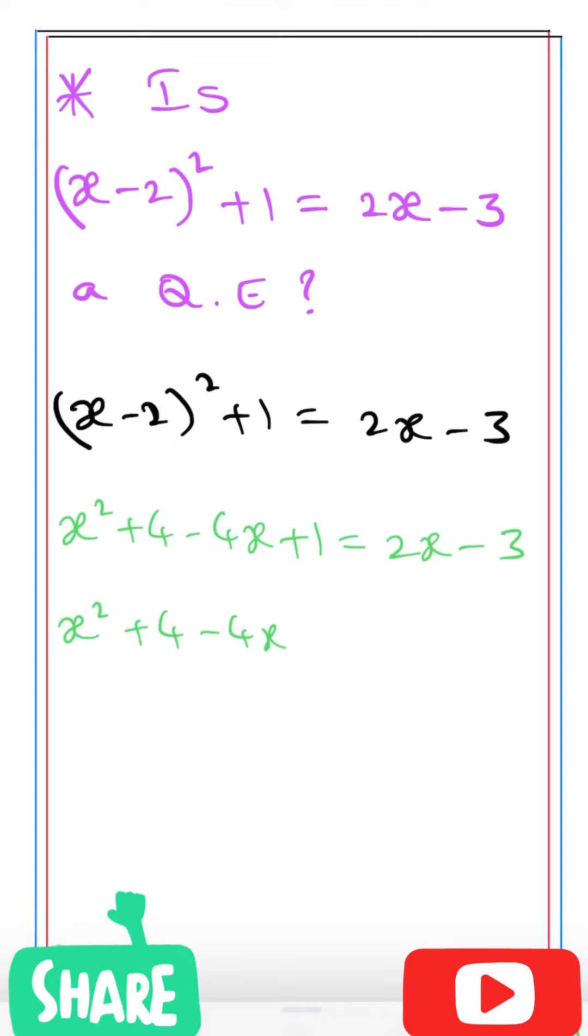x² + 4 - 4x + 1. If I take 2x to the left side it becomes -2x, and -3 becomes +3, which equals 0. Now if we simplify this, x² as it is...